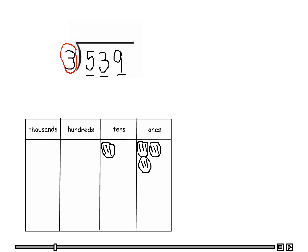Now let's look at the hundreds, which we have five. Let's put five discs here in groups of three: one, two, three, four, five. As you can see, we only have one group of three with two left over. We can't divide three into two, so we need to regroup — moving each hundred into the tens place.